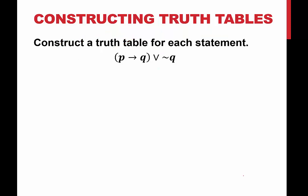Why don't you pause the video and try to create a truth table for this particular statement. Hopefully first you decided you needed four rows. And how many columns do we need? We need p, we need q, we need not q, we need p implying q, and we need the disjunction for the whole thing — so we need five columns. Remember what makes the conditional true: the hypothesis is false or the conclusion is true. This is a disjunction — true when one or both statements are true. And the negation is true when q is false.